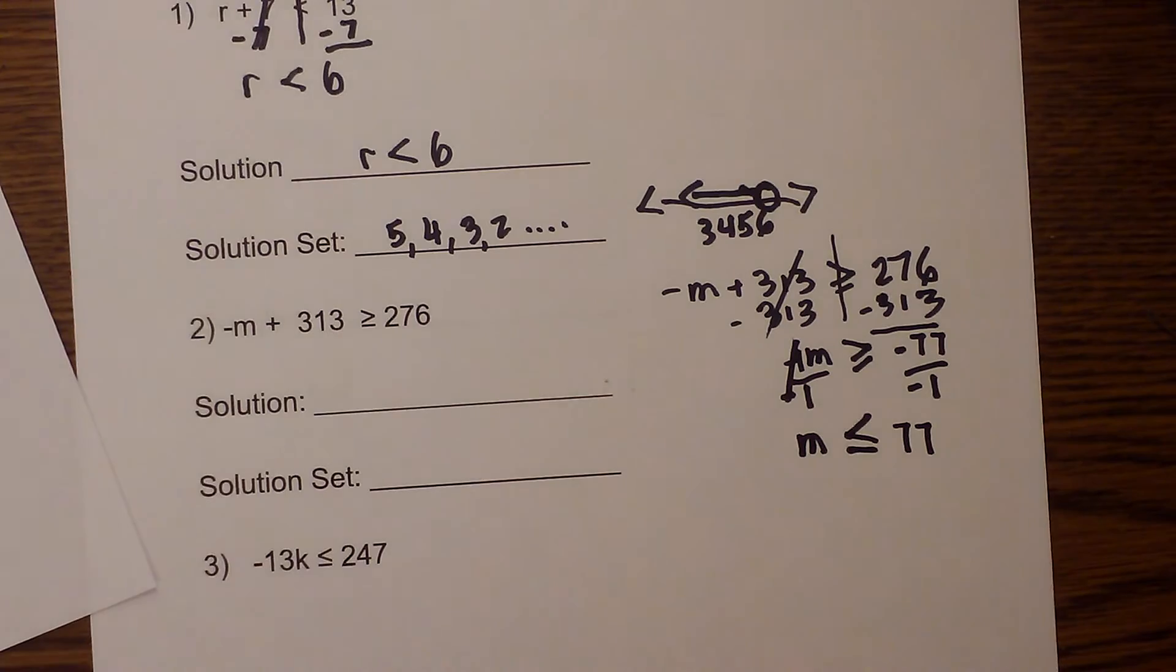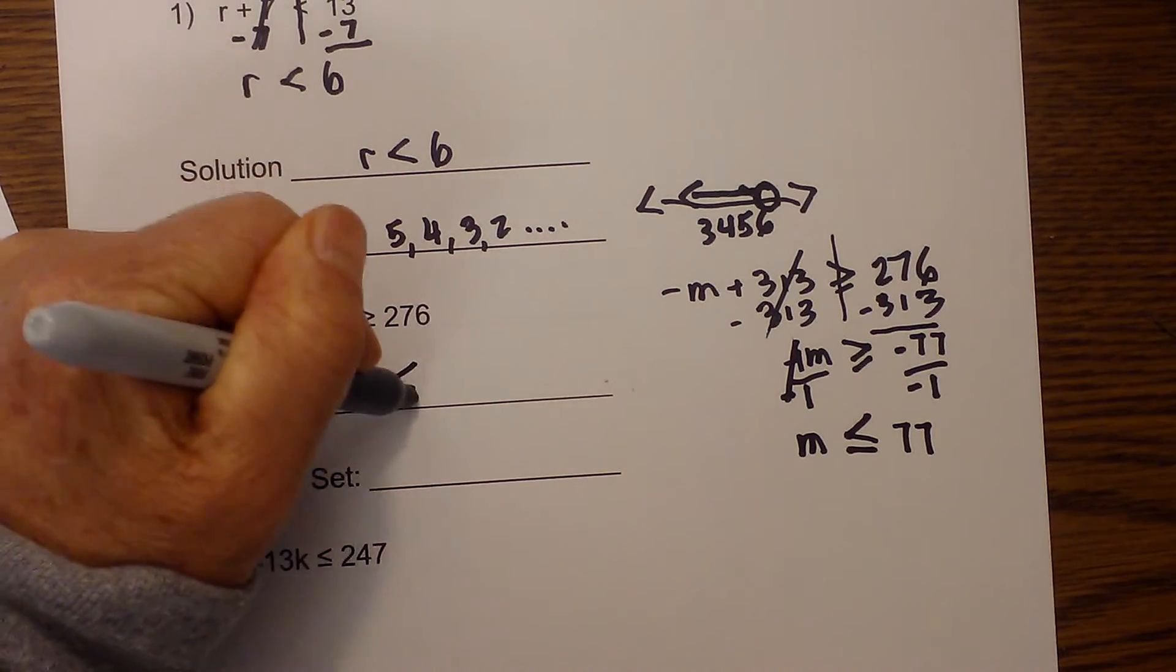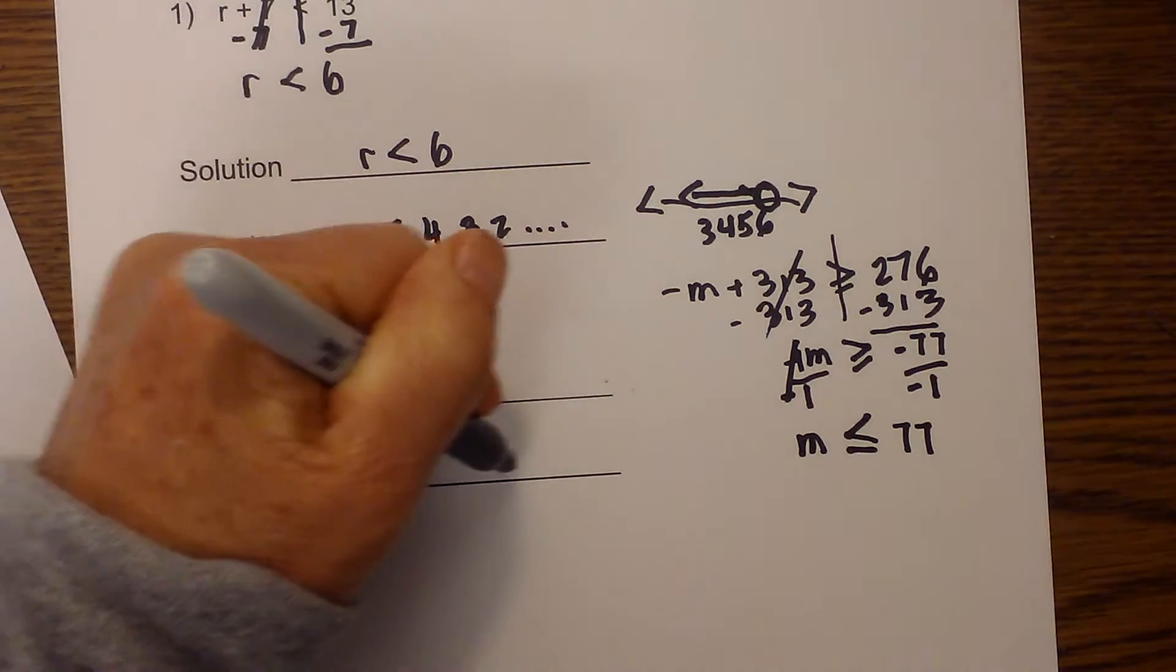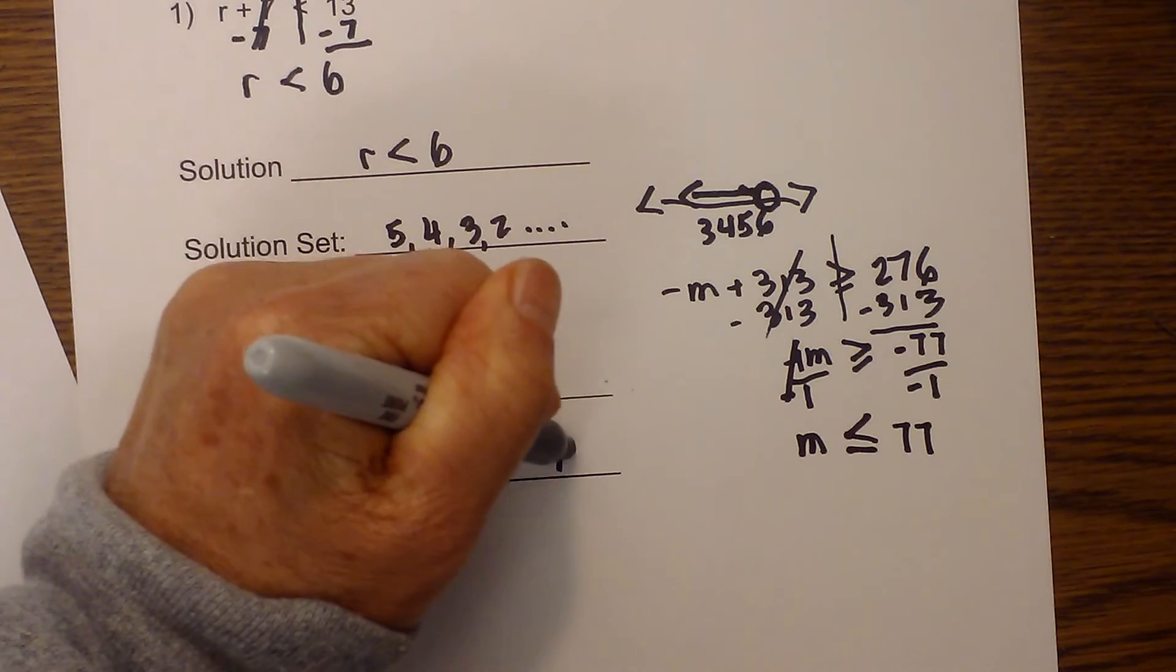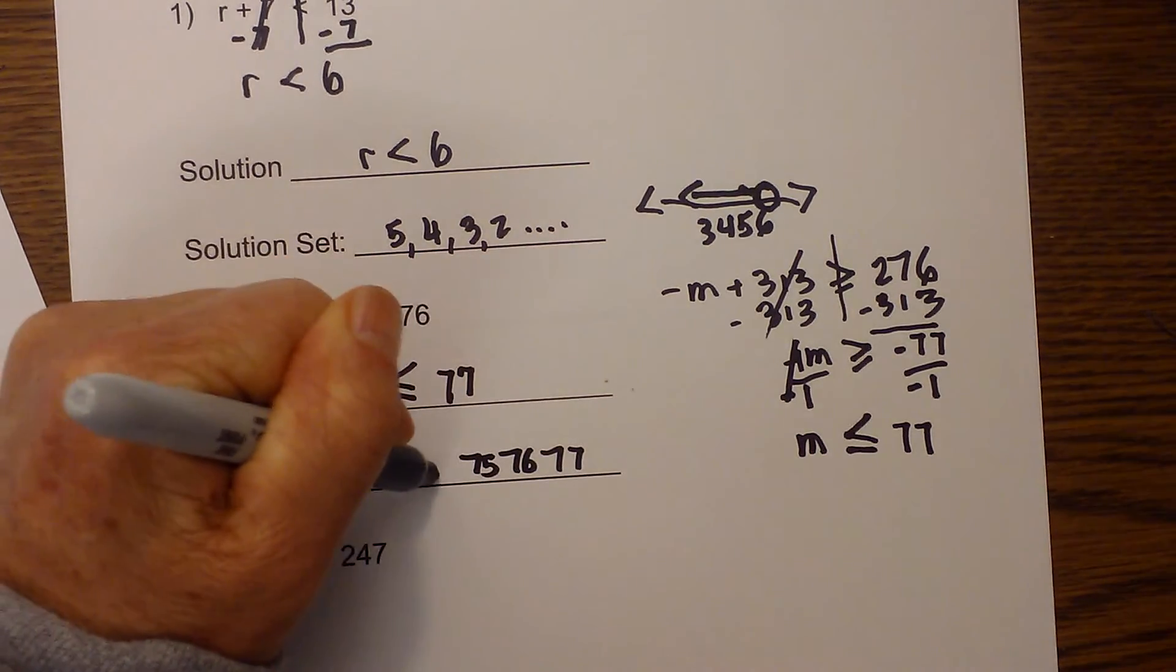So the solution is m is less than or equal to 77. The solution set would be 77, 76, 75, etc.